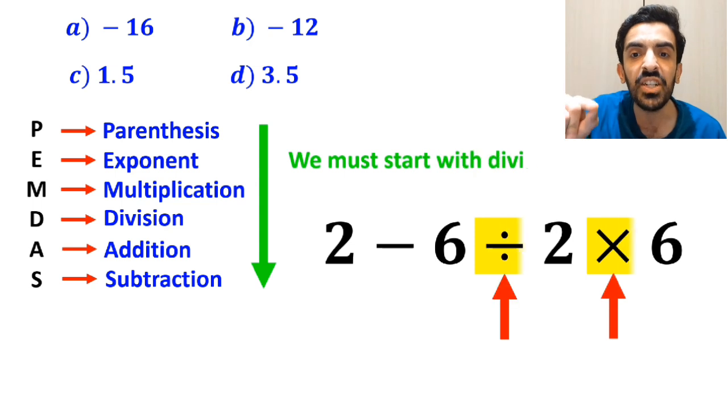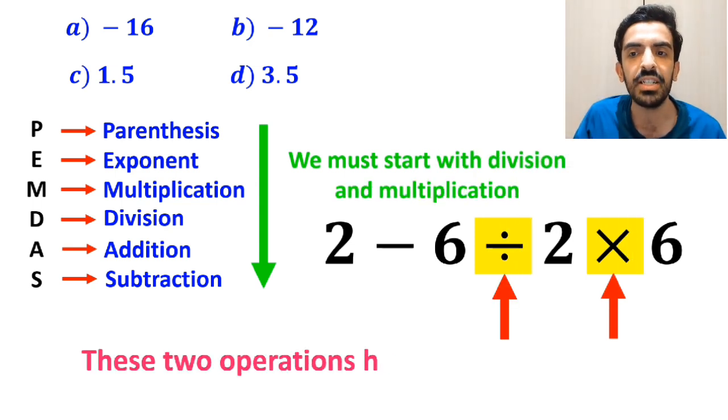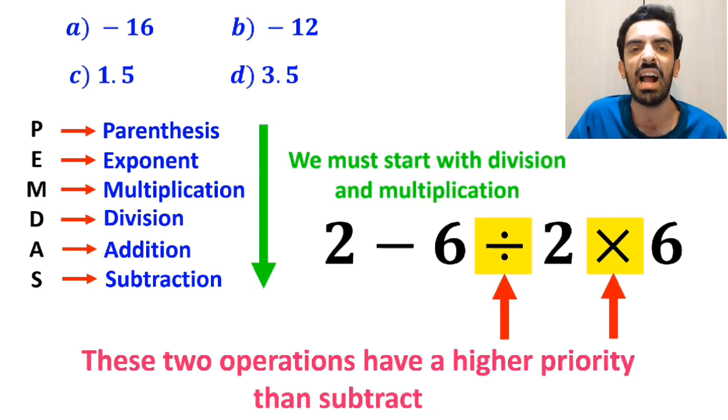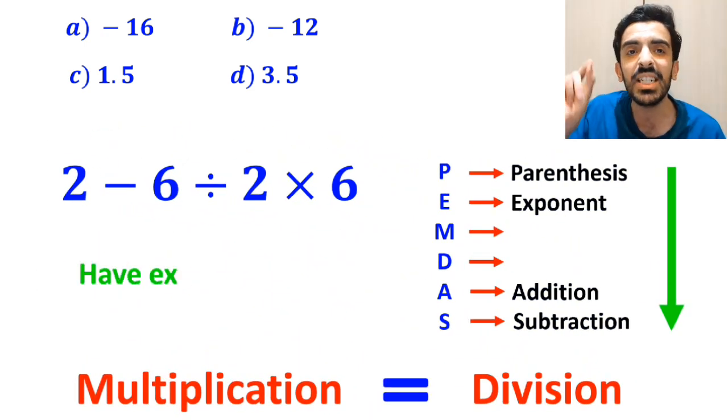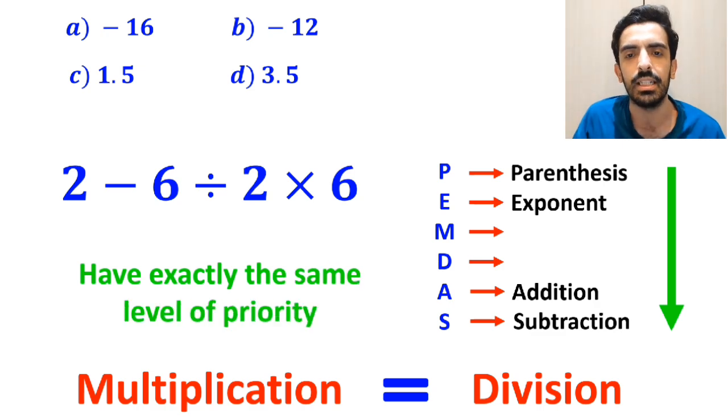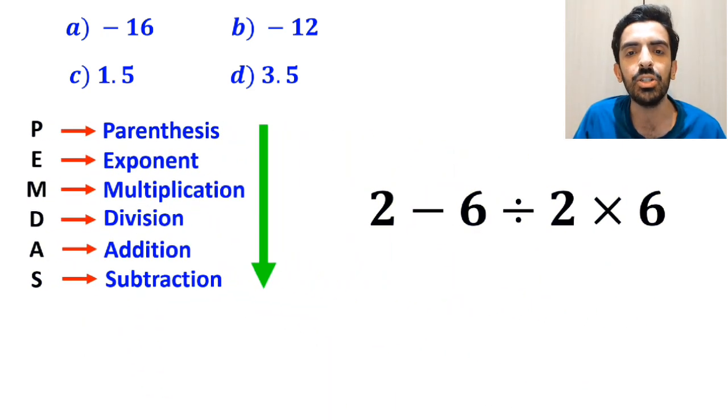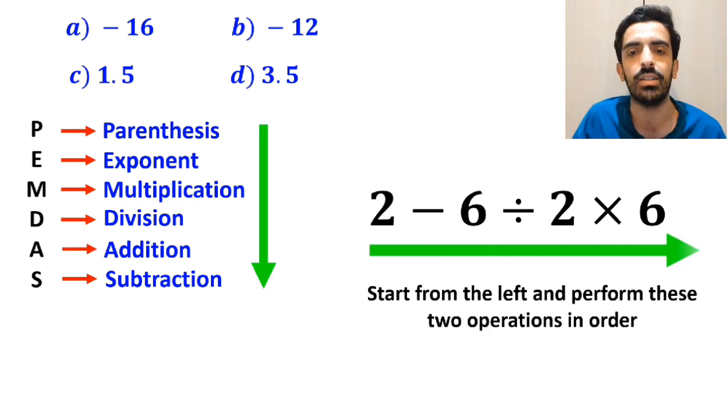According to the PEMDAS rule, we must start with the division and multiplication because these two operations have a higher priority than subtraction. However, it's very important to keep in mind that multiplication and division have exactly the same level of priority. In this situation, the best approach is to start from the left and perform these two operations in order.